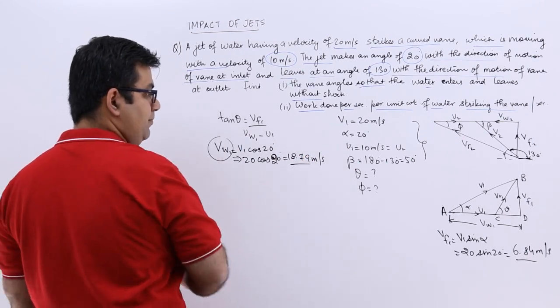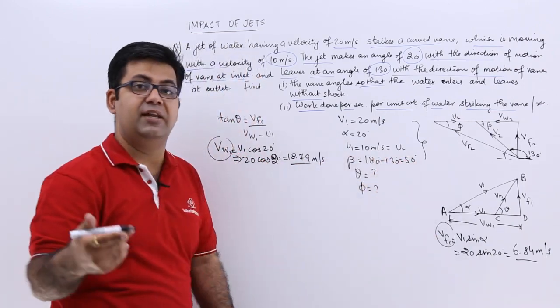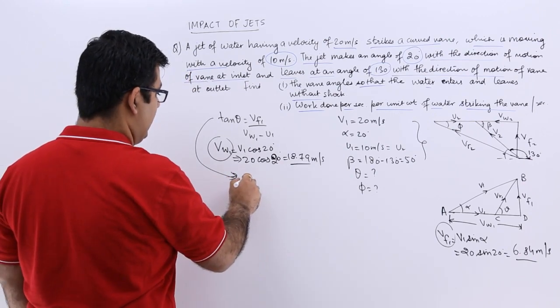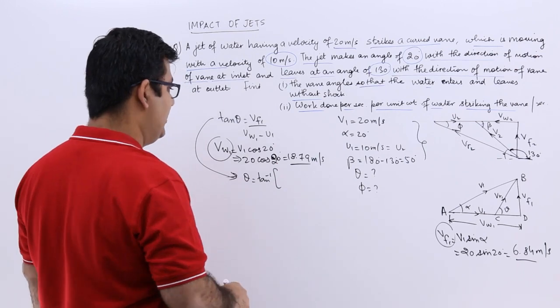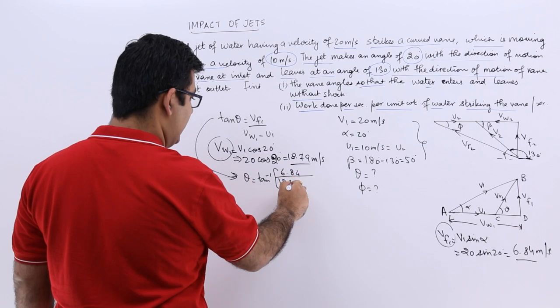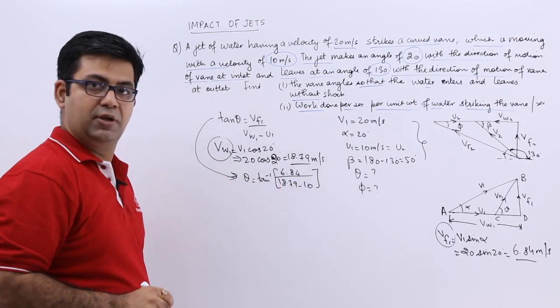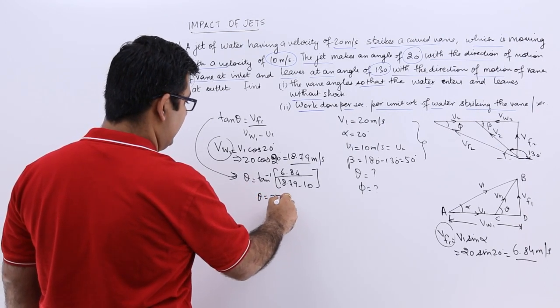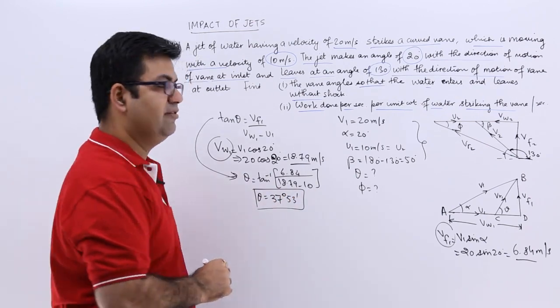You have VW1, you have VF1, and you already have U1, so you can easily find out theta now. From this equation I will get theta is equal to tan inverse of VF1 which is 6.84 upon 18.79 minus 10. When you solve this, the value of theta comes out to be 37 degrees 53 minutes.